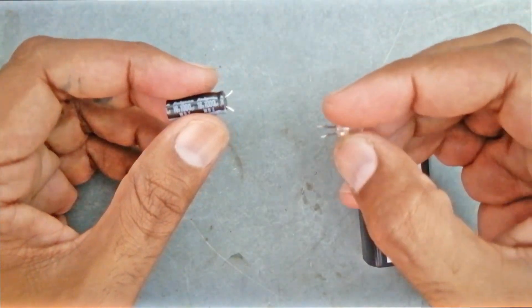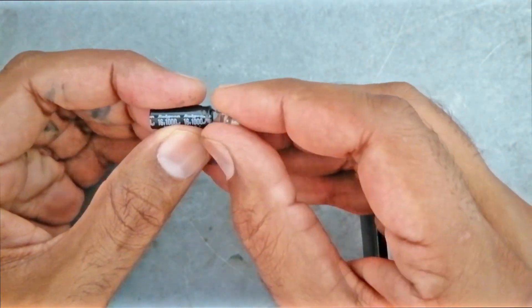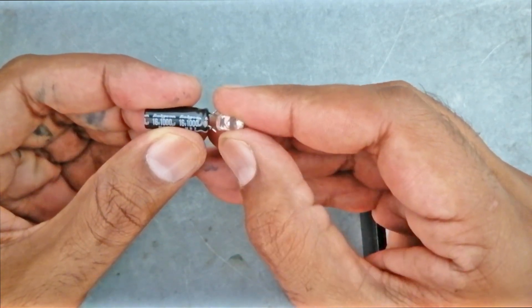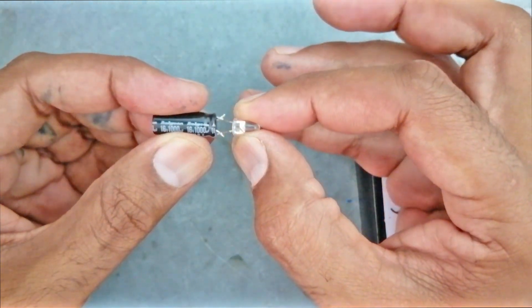This is an LED bulb. When we attach the LED bulb with the capacitor, it did not turn on. That means there is no current in the capacitor.